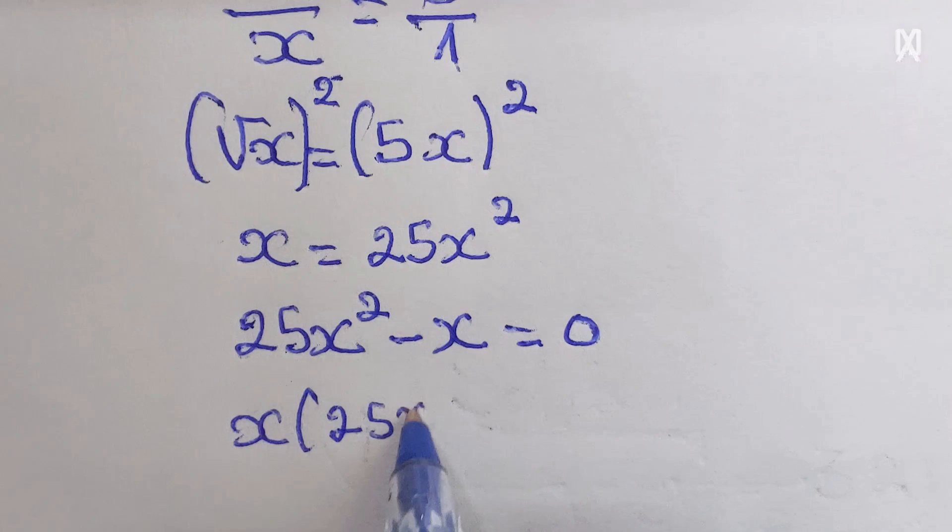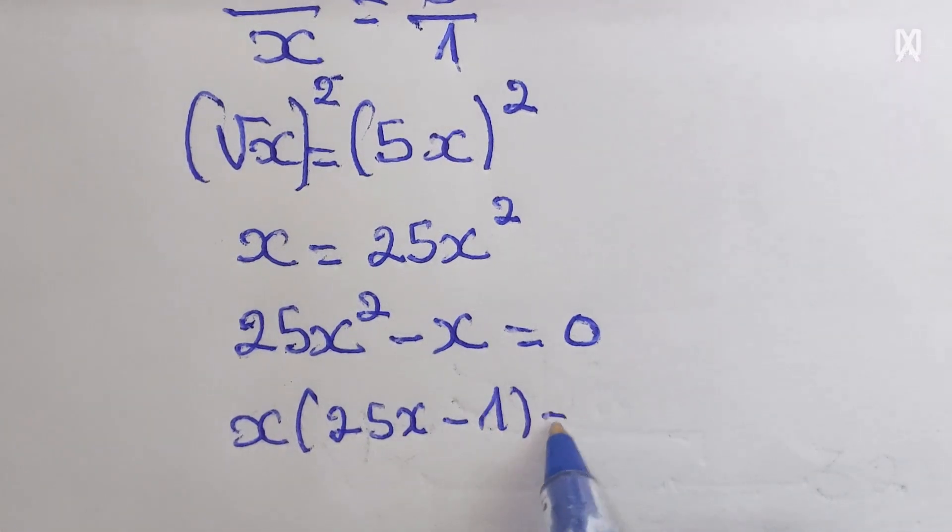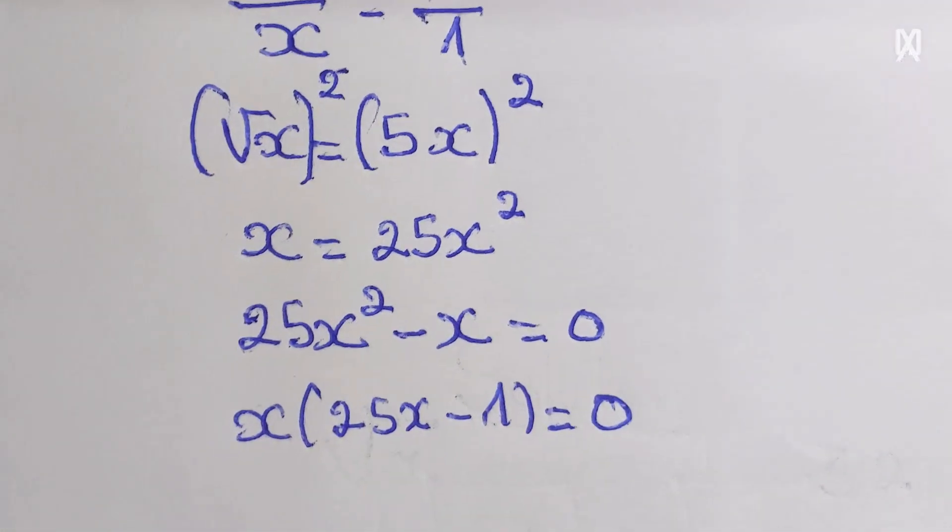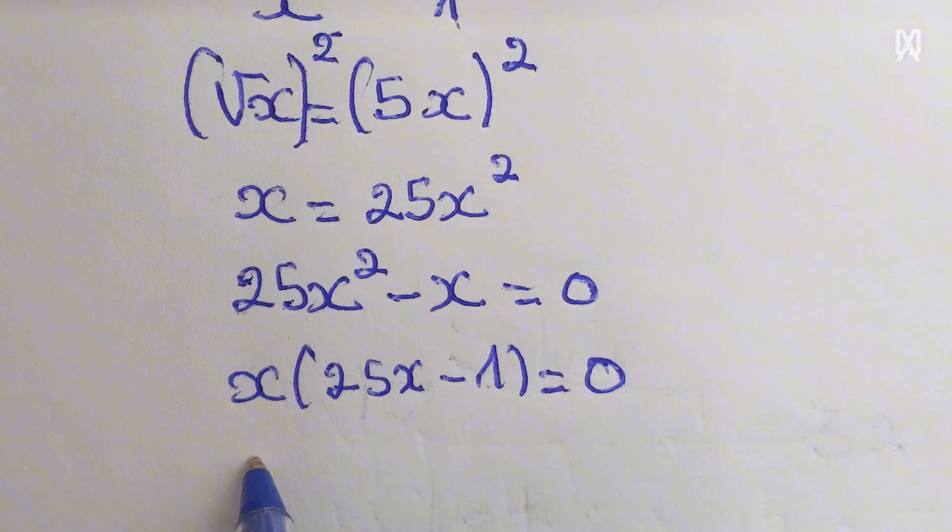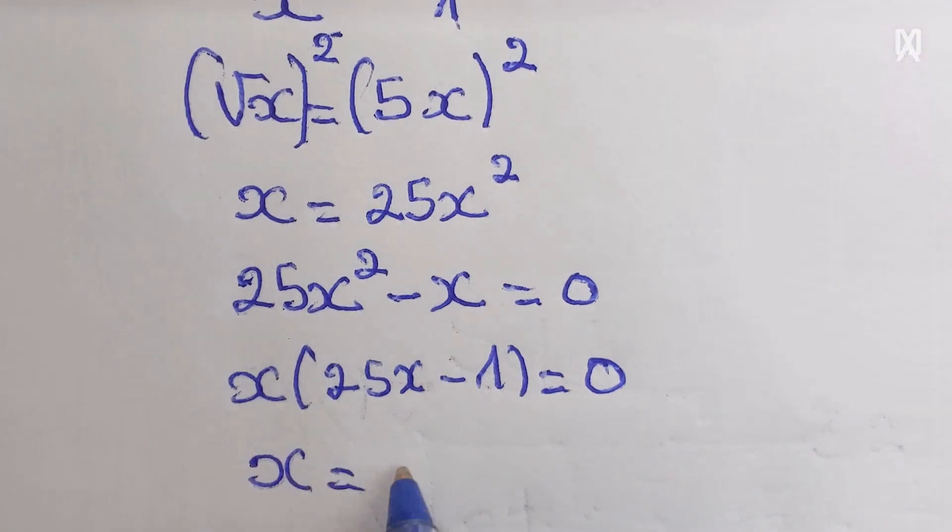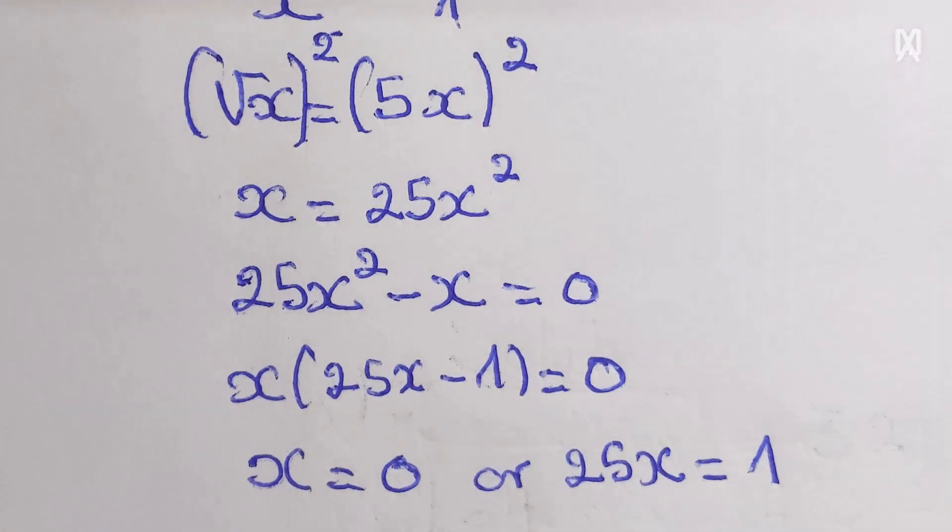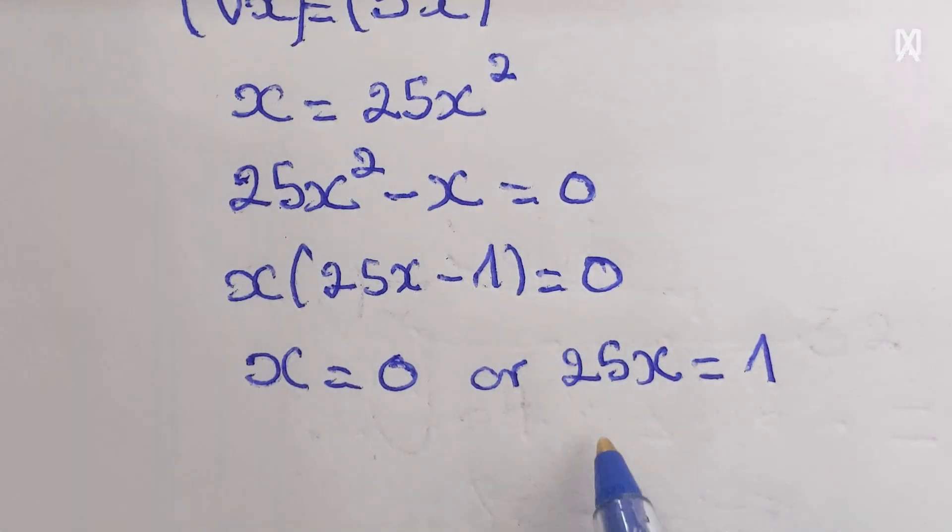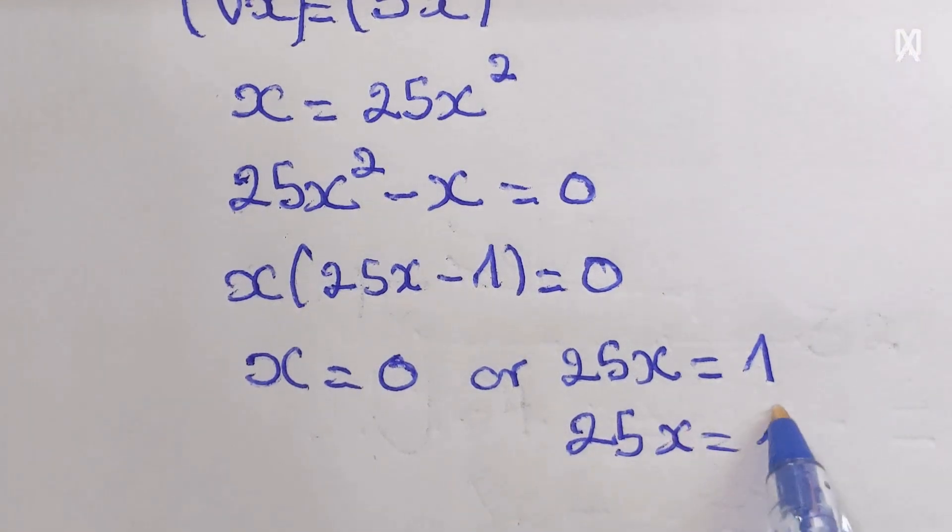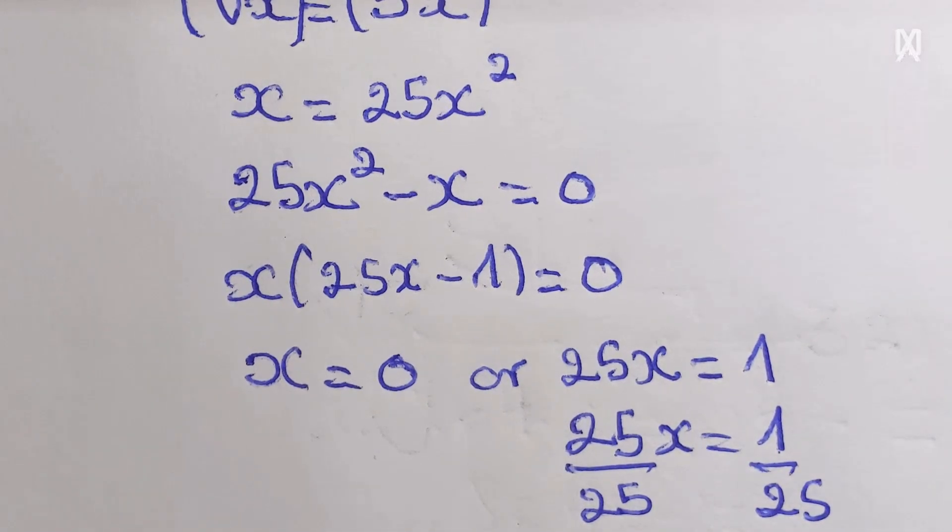Then x, by factorizing, x to get 25x minus 1 which equal to zero. Then x will be equal to zero or 25x will be equal to 1.